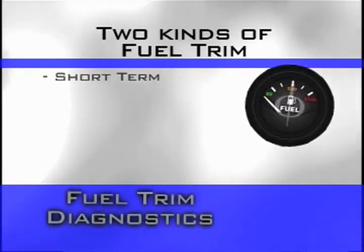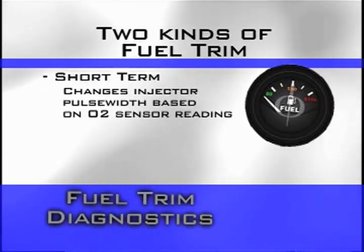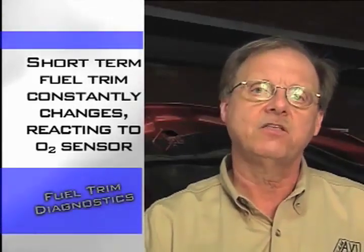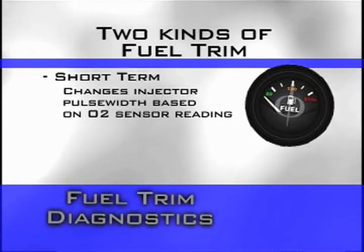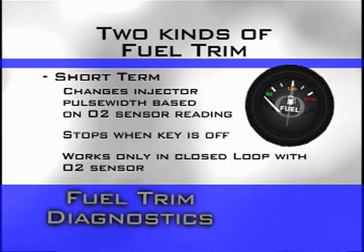We have two different fuel trims on the vehicle. One is short-term fuel trim — the ability to change the injector pulse width based on O2 sensor input. Short-term is a system that is working constantly, reacting to the O2 sensor input. If the O2 sensor stays high, you're going to see short-term fuel trim try to take away fuel, reducing the injector pulse width to create a slightly leaner situation. When you turn the key off, short-term fuel trim goes away. It only works in closed loop, reacting directly to your O2 sensor input.